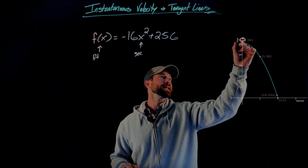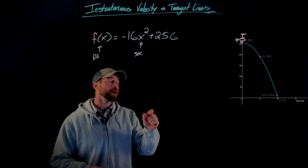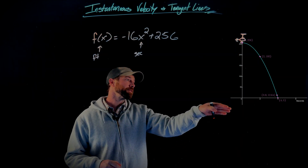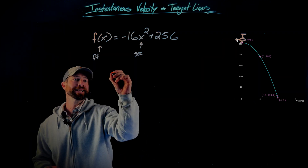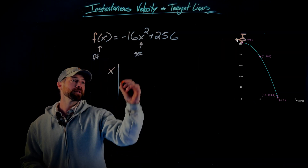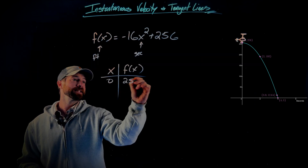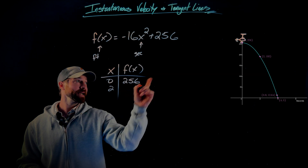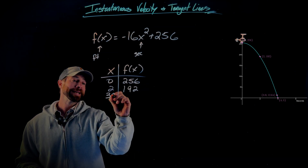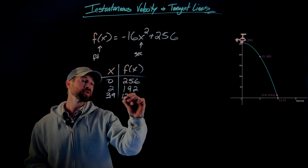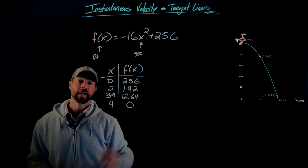At zero seconds, it starts at 256 feet — here's my beautiful little helicopter. After four seconds, it has hit the ground. We use this information in a table of values that's graphically represented. At zero seconds, we're at 256 feet. After two seconds, we had gone down to 192. At 3.9 seconds, we were down to 12.64 feet. And after four seconds, we have hit the ground.